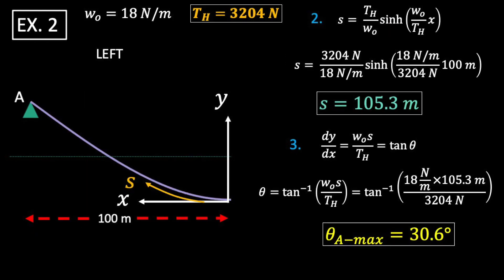For the left hand side, we already have our horizontal tension from doing the right side. So we start at step two. We find our cable length from the origin to point B. Then we find our maximum angle.